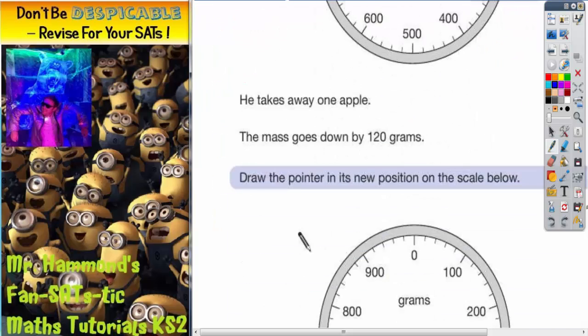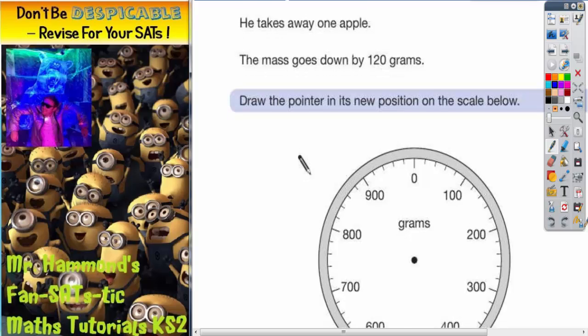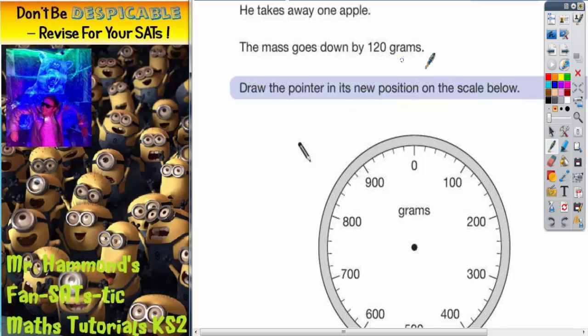Now let's scroll down and see what we're going to do. It says it takes one apple. The mass goes down by 120 grams. Draw the pointer in its new position on the scale below. Well if it's going to go down by 120 grams.